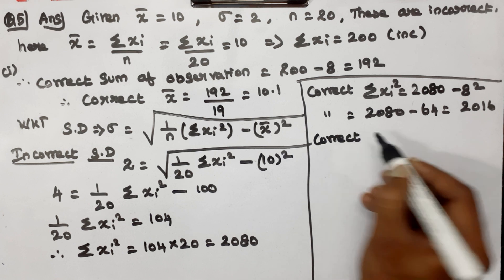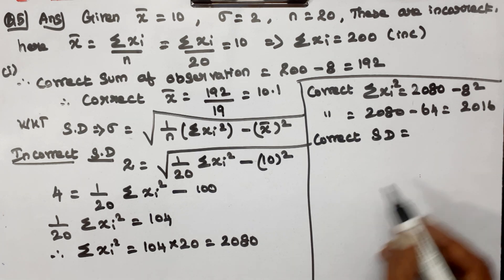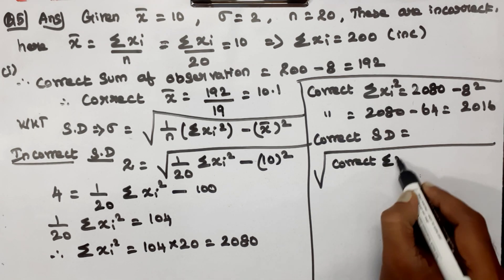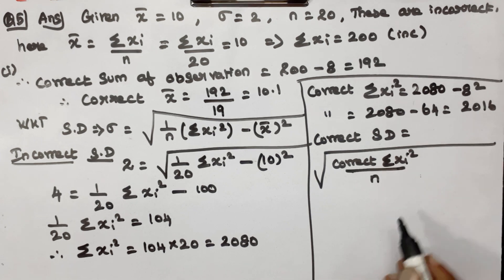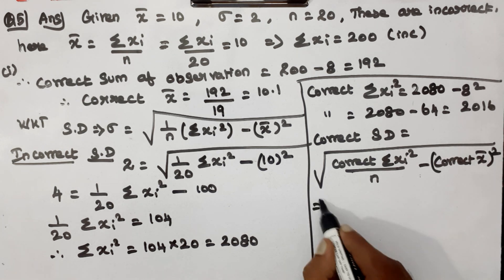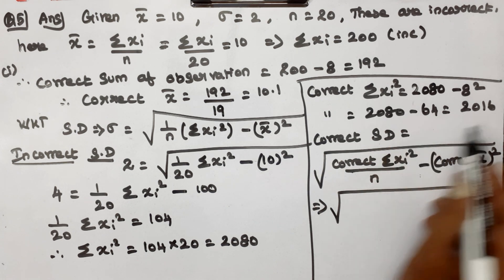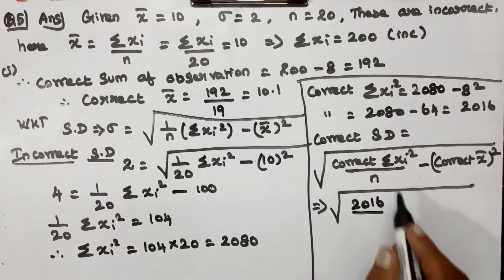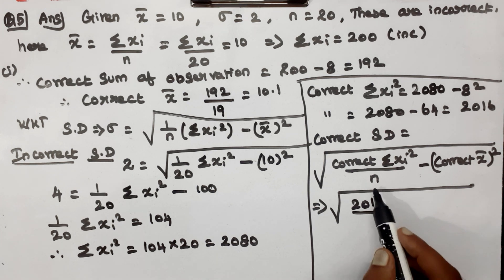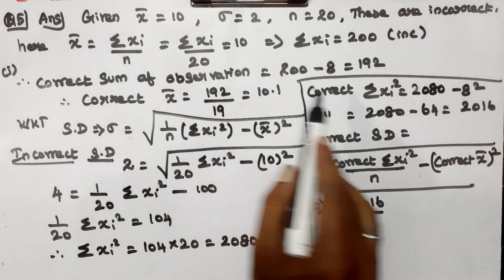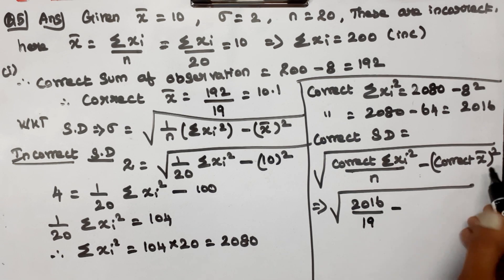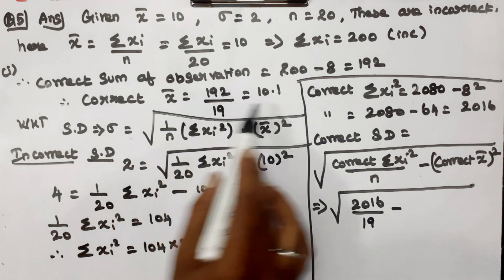Now for the correct standard deviation, we use the formula: correct SD = square root of (correct summation xi² / n − correct x-bar²). Here n = 19 (20 observations minus 1 omitted = 19). Correct x-bar will also be recalculated.